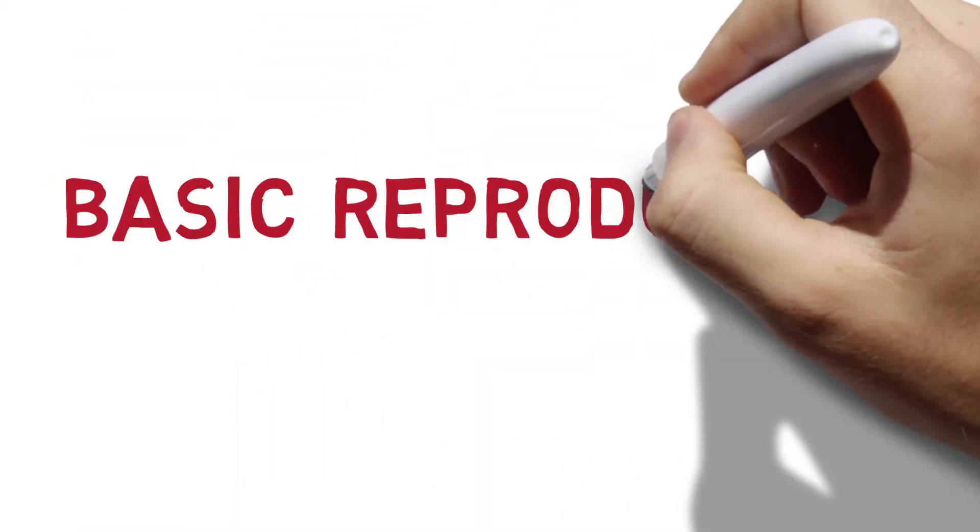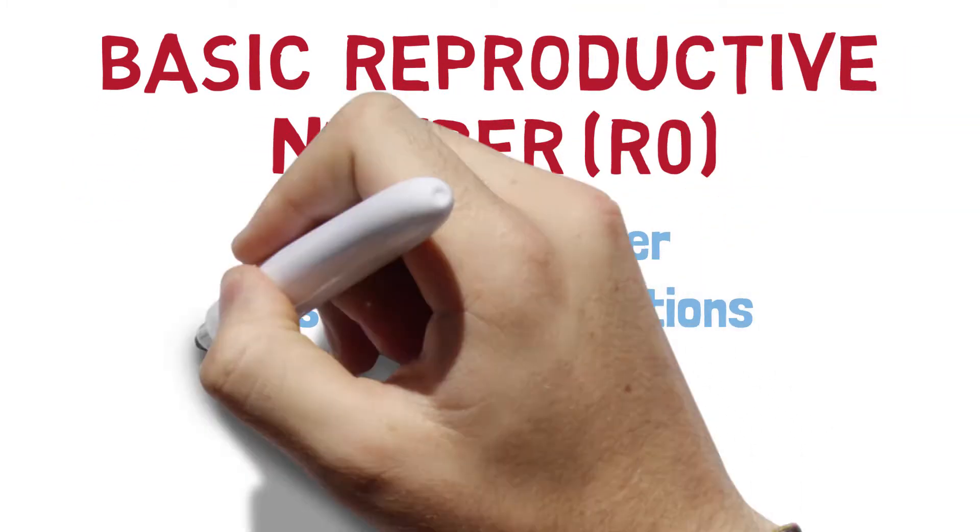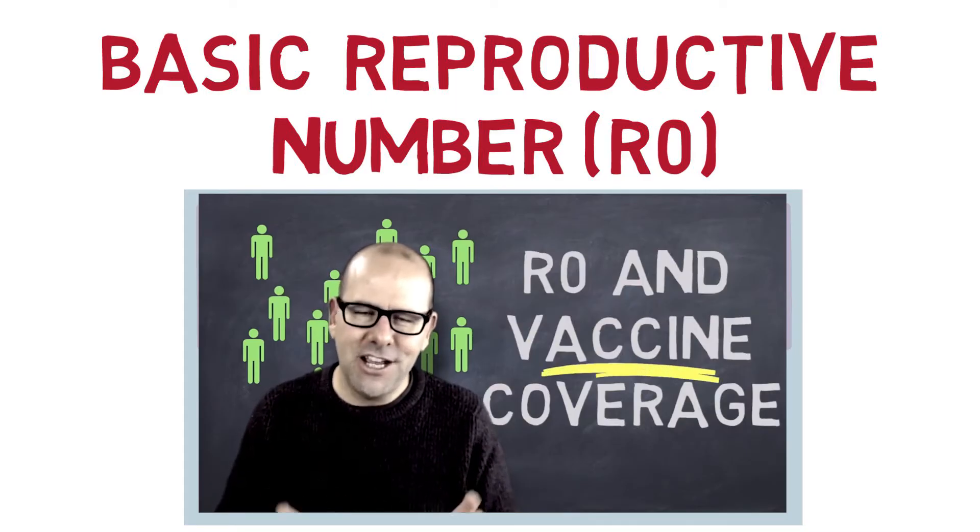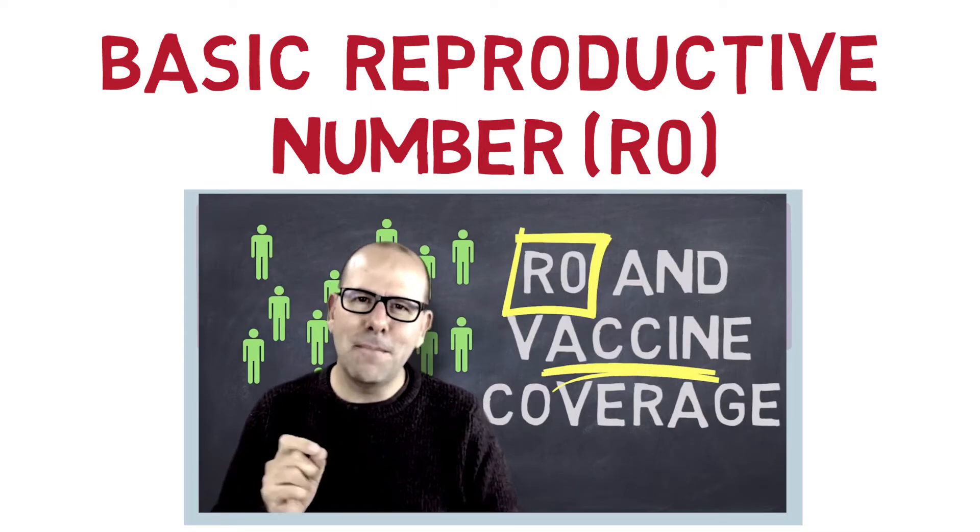Next, the basic reproductive number, or R0. This is the average number of secondary infections caused by an infected individual in a fully susceptible population. And I have another video on R0 if you want to understand how it is that we use this number to determine how much vaccine coverage we need to get to herd immunity.